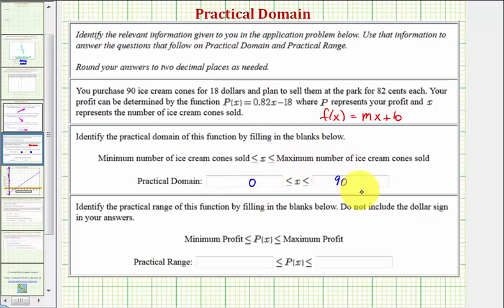For review, if we wanted to express the domain using interval notation, we'd use a square bracket zero comma 90 square bracket. Remember, the square brackets indicate the end points are included.